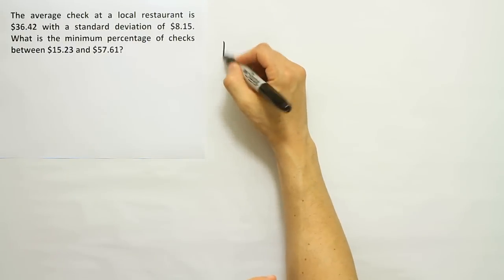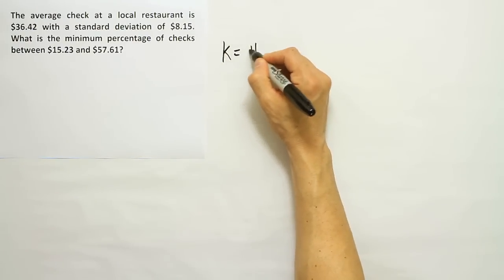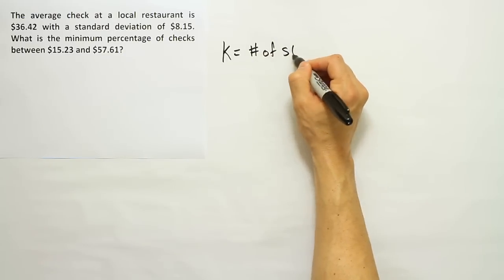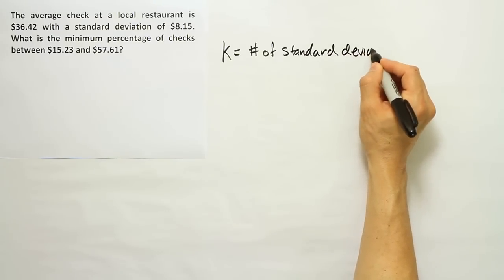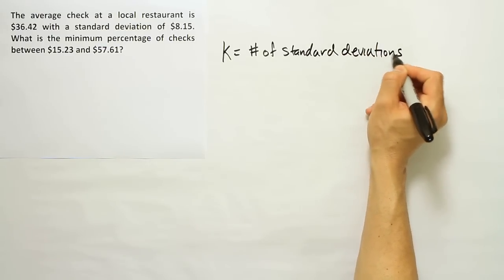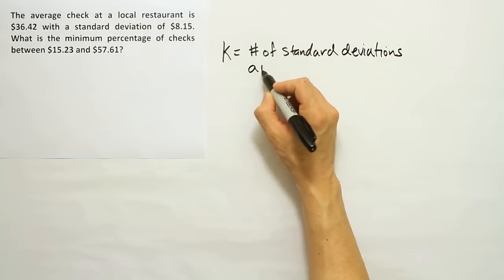So recall that K is the number of standard deviations away from the mean.